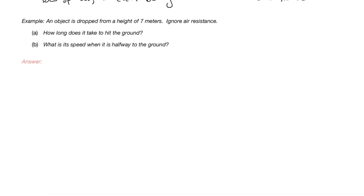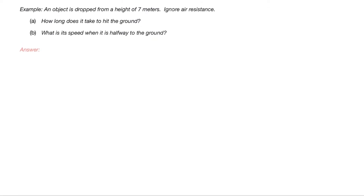Let's look at our first example. We're simply dropping an object from a height of 7 meters and ignoring air resistance, asking how long it takes to hit the ground and what its speed is when it's halfway to the ground. Solving this problem gives us a chance to be systematic. One key takeaway from this course is that it's very important to approach these problems systematically — practicing it is the key to developing your problem solving skills, especially on harder problems like an AP exam.